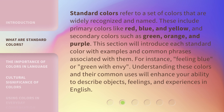Standard colors refer to a set of colors that are widely recognized and named. These include primary colors like red, blue, and yellow, and secondary colors such as green, orange, and purple. This section will introduce each standard color with examples and common phrases associated with them. For instance, 'feeling blue' or 'green with envy.' Understanding these colors and their common uses will enhance your ability to describe objects, feelings, and experiences in English.